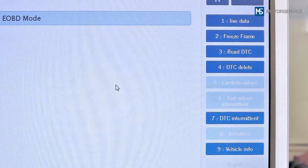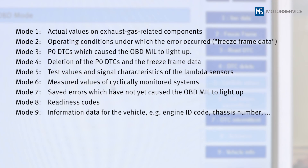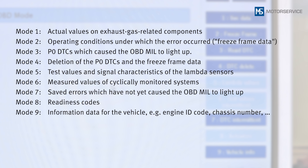All the functions of the OBD can be called up using nine standardized modes, from mode 1 — reading out actual values — to mode 9 — vehicle information. The method of depiction is not stipulated.